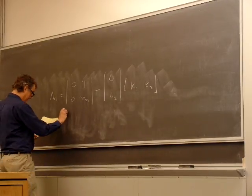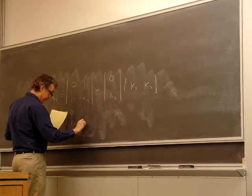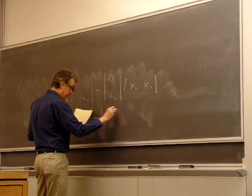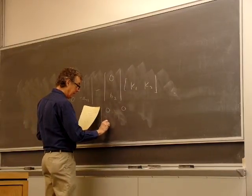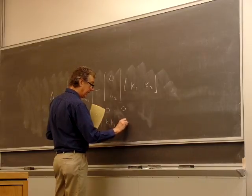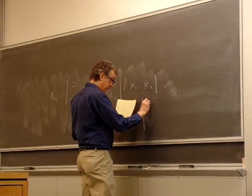Alright, so multiply these out and we'll have zero, one, minus B2 K1, and minus A22 minus B2 K2.